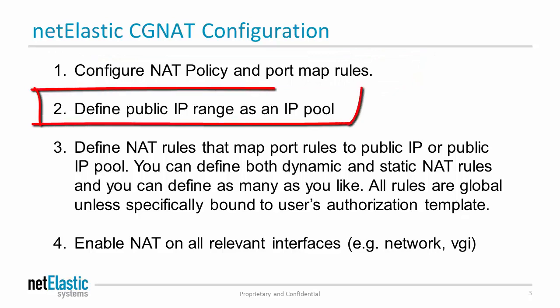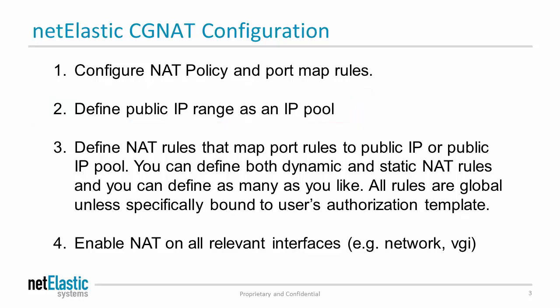Next, we define a public IP range as a resource pool. These are the IPs that the private IPs will be NATed to. For easy IP type of NAT where you only have a single outgoing interface, the public IP pool definition won't be necessary.